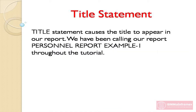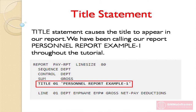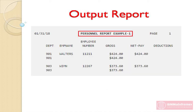Next report definition statement is the Title statement. The Title statement causes the title to appear in our report. We have been calling our report 'Personnel Report Example 1' throughout the tutorial. You can change it to any appropriate title. Include the word 'title' followed by a title number, followed by your title in single quotes. If you have only one title, you don't need to mention the title number — it defaults to 01. When you want more than one title, you must number all title statements in ascending order. The result of the Title statement is that the system date and the page number are automatically printed on the same line.